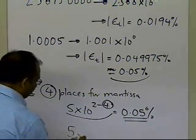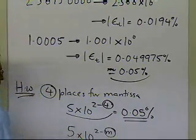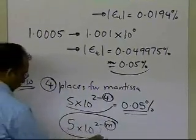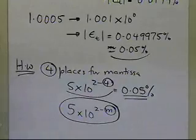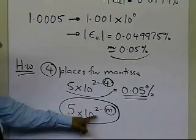So you might have hit on something here, that if I have m number of places for the mantissa, then the amount of relative true error which I'm going to get in representing any of the numbers which can be represented, will be less than or equal to 5 times 10 to the power 2 minus m,